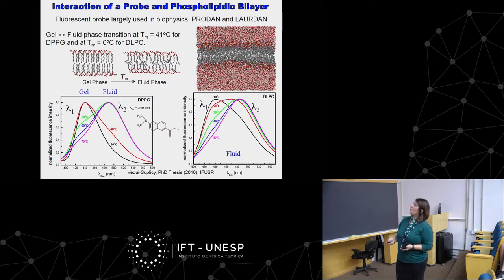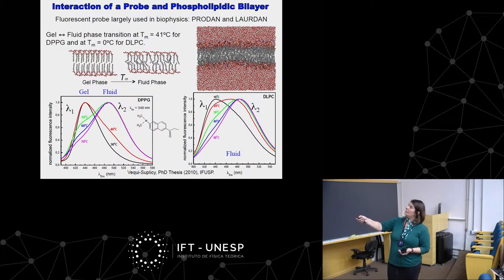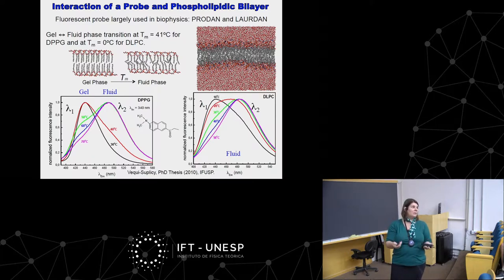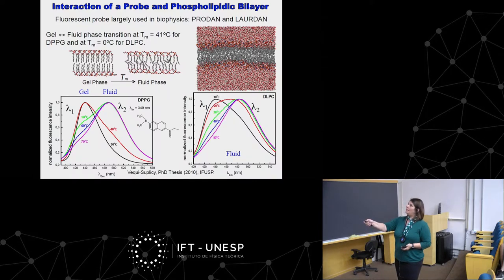Returning to a problem we studied: in a phospholipid bilayer we have a polar head group that likes to interact with water, and nonpolar carbon tails that do not like water. When phospholipids are placed in water they form bilayers — polar heads up and down, tails in the middle. There are typically two phases: the gel phase, where heads and tails are nearly organized, and the fluid phase, where they are very unorganized. This phase transition can be measured in the lab by calorimetry.